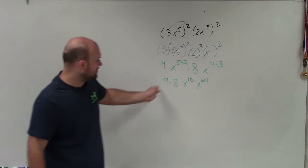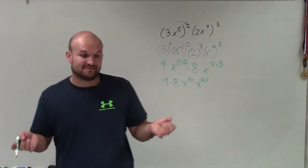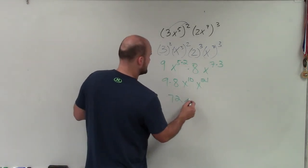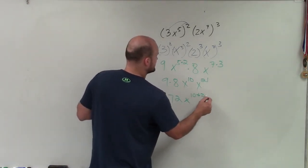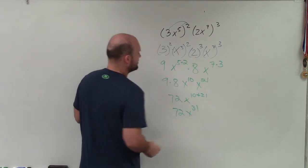Now when I'm multiplying, I can multiply 9 times 8, that's 72. And when I multiply exponents, as long as I have the same base, I add their powers. So I have 72 times x to the 10 plus 21. So my final answer is 72x to the 31st power.